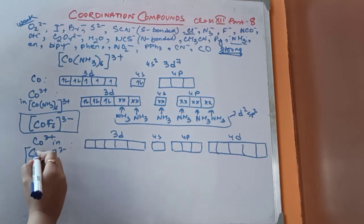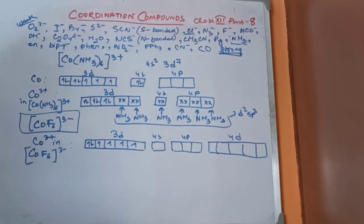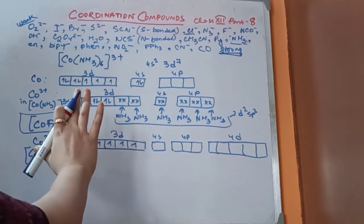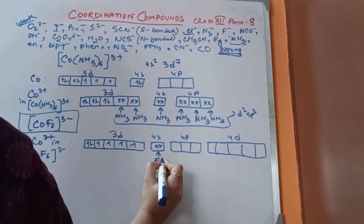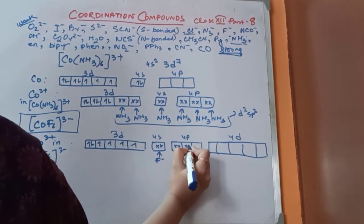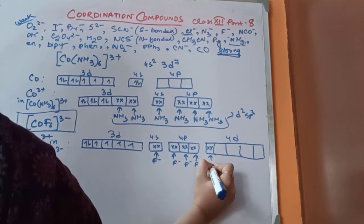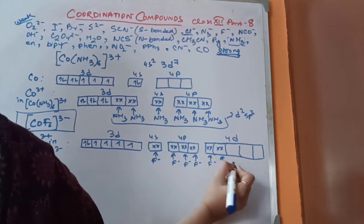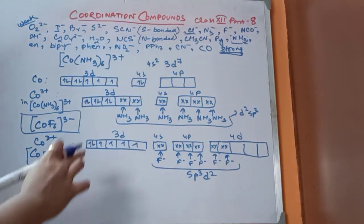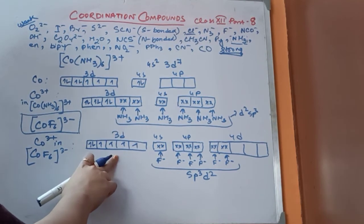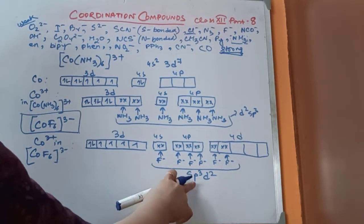Since fluoride will not facilitate pairing, the 3D orbital cannot accommodate the ligand electrons. So the ligands will have to occupy the higher energy 4D orbitals. This gives SP3D2 hybridization. The cobalt amine complex is diamagnetic and is an inner orbital complex with D2SP3 hybridization. The CoF6 complex is paramagnetic with 4 unpaired electrons and is an outer orbital complex with SP3D2 hybridization.